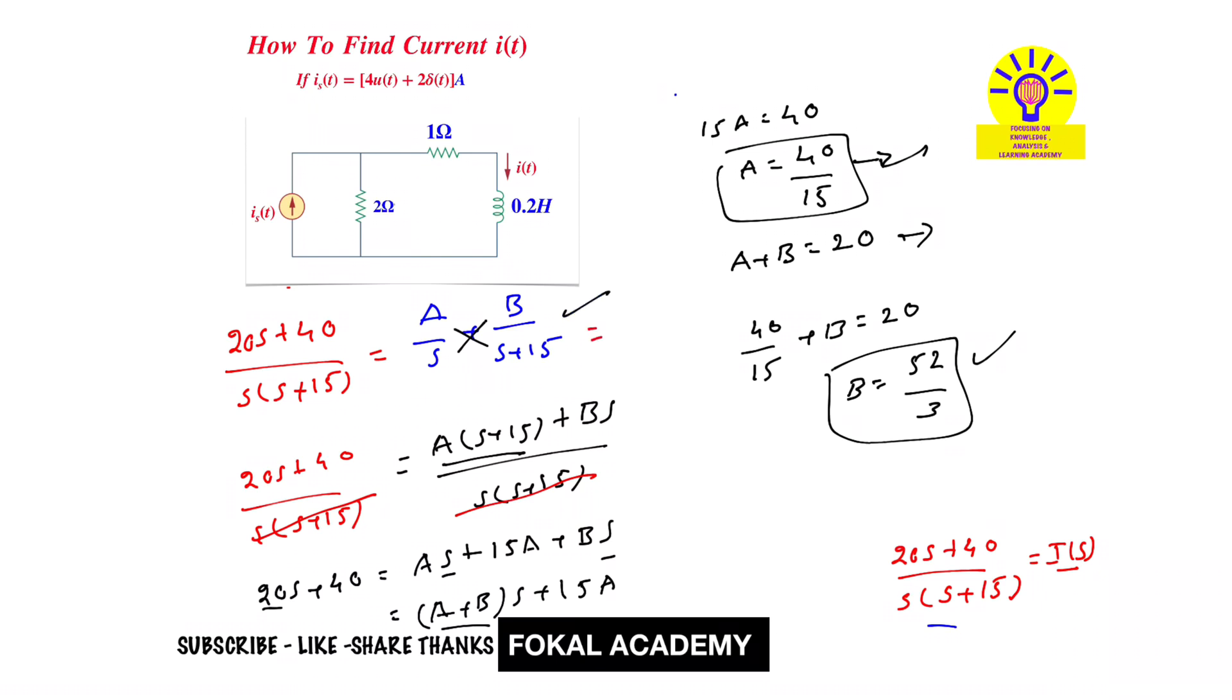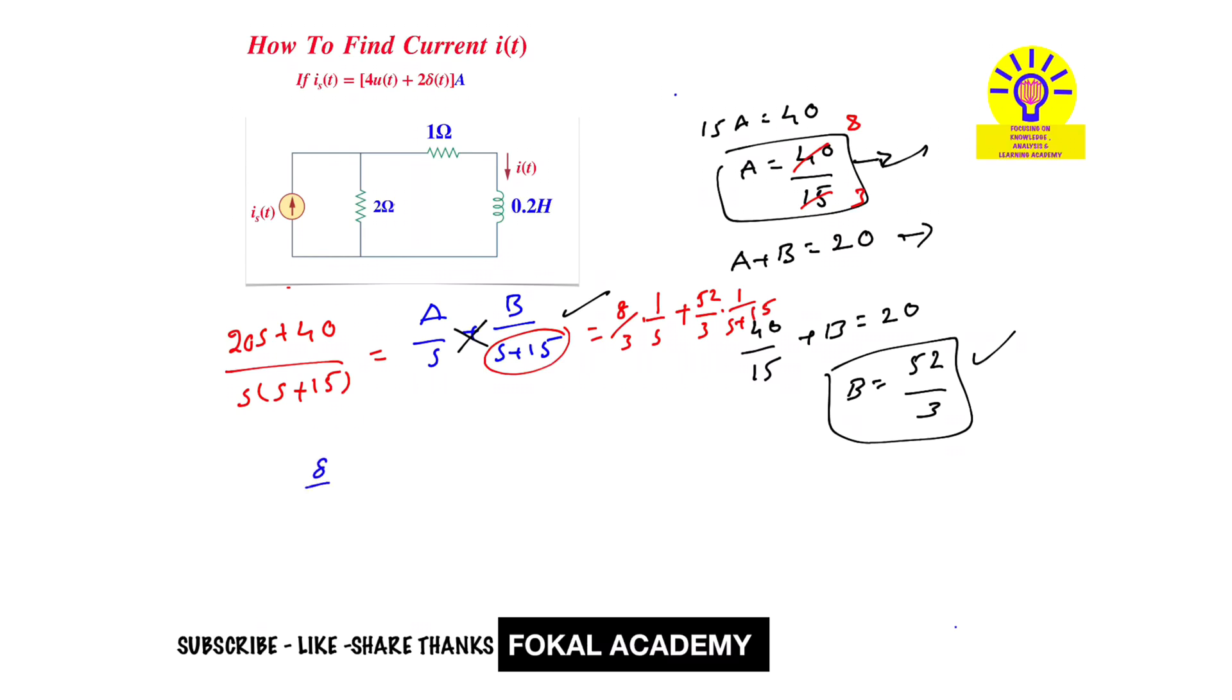This is A value and this is B value. Now substitute these two values in the equation. It becomes A is 8 by 3 times 1 by S plus B is 52 by 3 times 1 by S plus 15. It becomes 8 by 3 times 1 by S plus 52 by 3 times 1 by S plus 15. Now apply inverse Laplace transform for this.